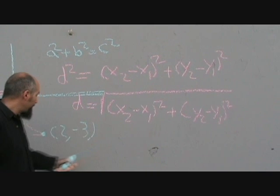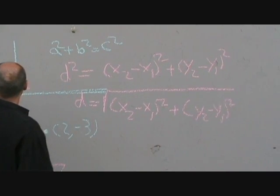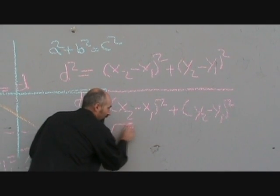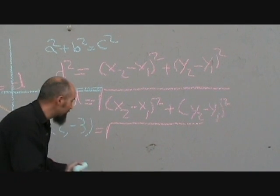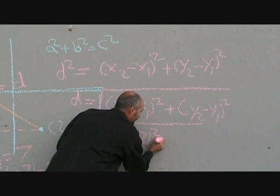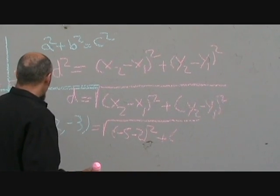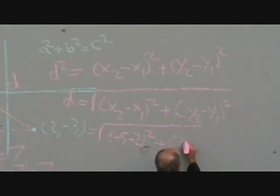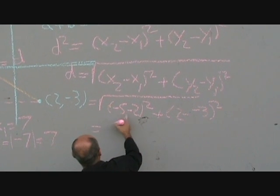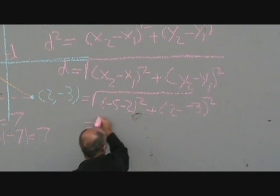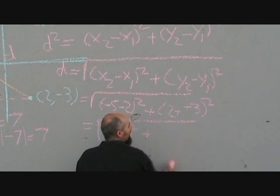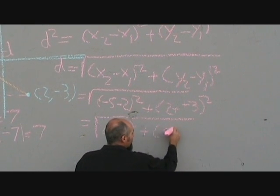That's the distance formula. And we figured out what x2 minus x1 was, which was negative 5 minus 2. So I'm just going to recreate it here so you see how it follows. It becomes negative 5 minus 2 squared plus y2 was 2, y1 was negative 3, so 2 minus negative 3 squared. Negative 5 minus 2 is negative 7. Negative 7 squared plus negative and negative becomes positive, 5 squared.